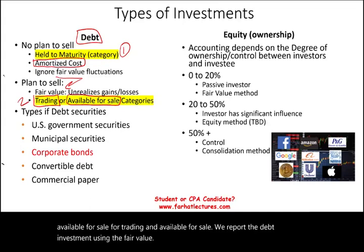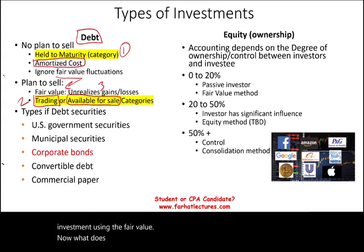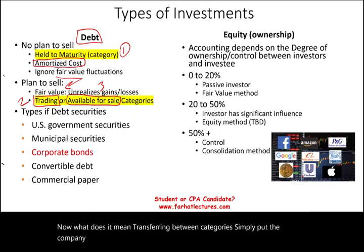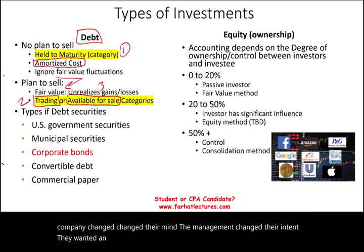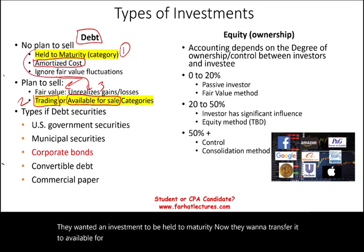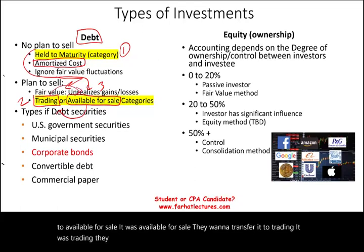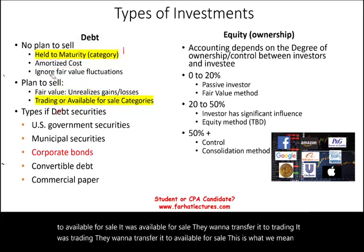What does it mean to transfer between categories? Simply put, the company changed their mind — the management changed their intent. They wanted an investment to be held to maturity, now they want to transfer it to available for sale. It was available for sale, they want to transfer it to trading. It was trading, they want to transfer it to available for sale. This is what we mean by transfer between different categories.